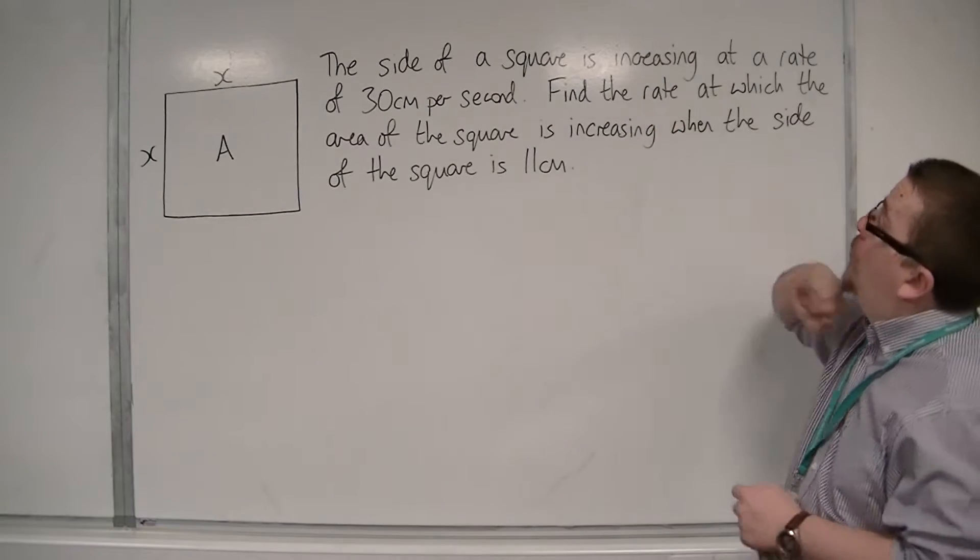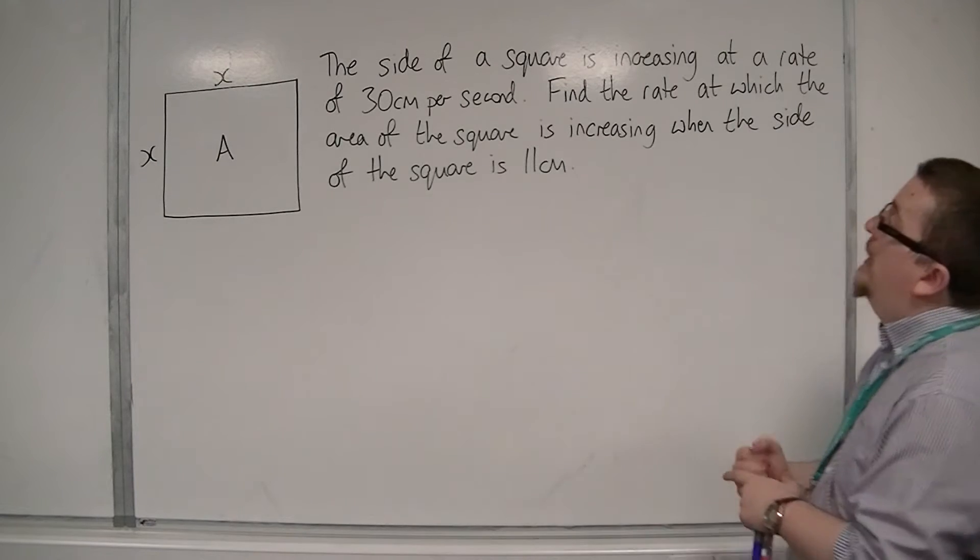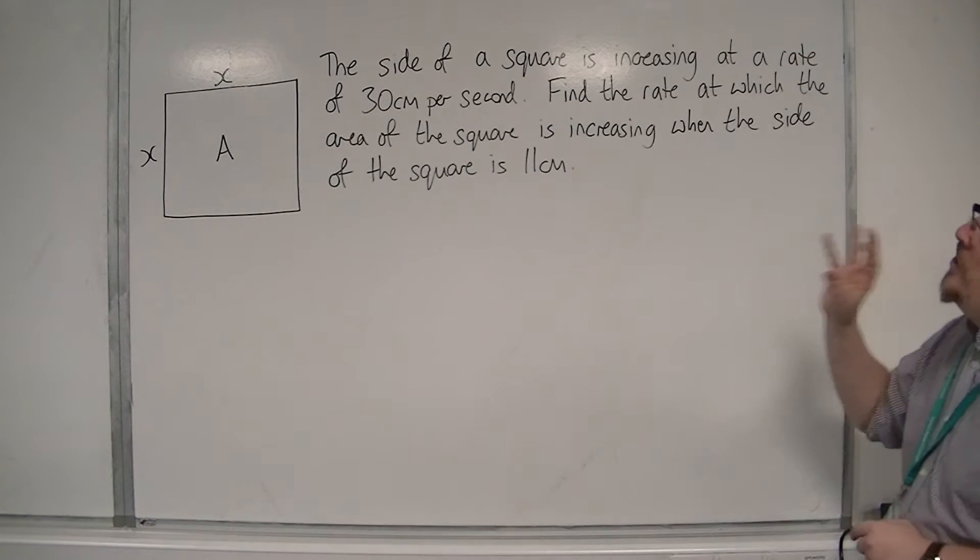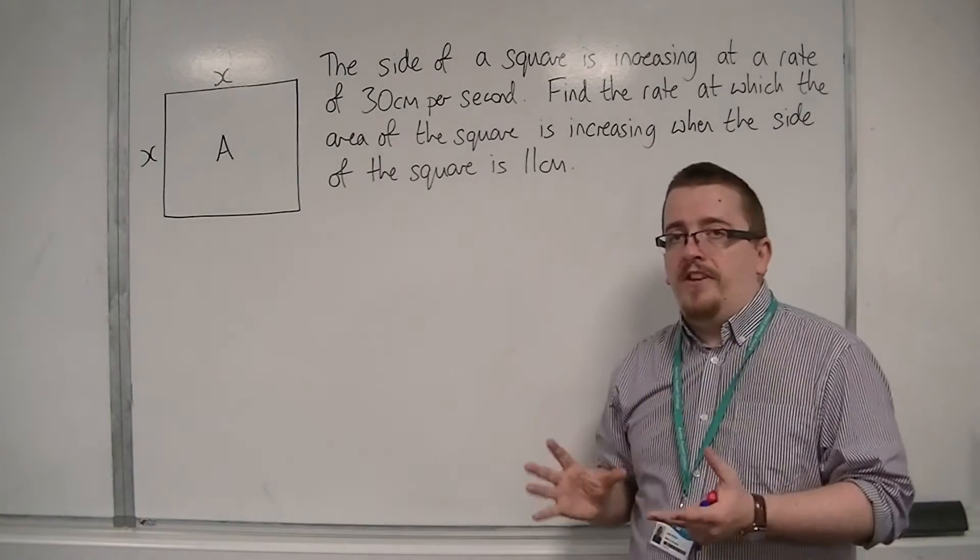The side of a square is increasing at a rate of 30 centimetres per second. Find the rate at which the area of the square is increasing when the side of the square is 11 centimetres.